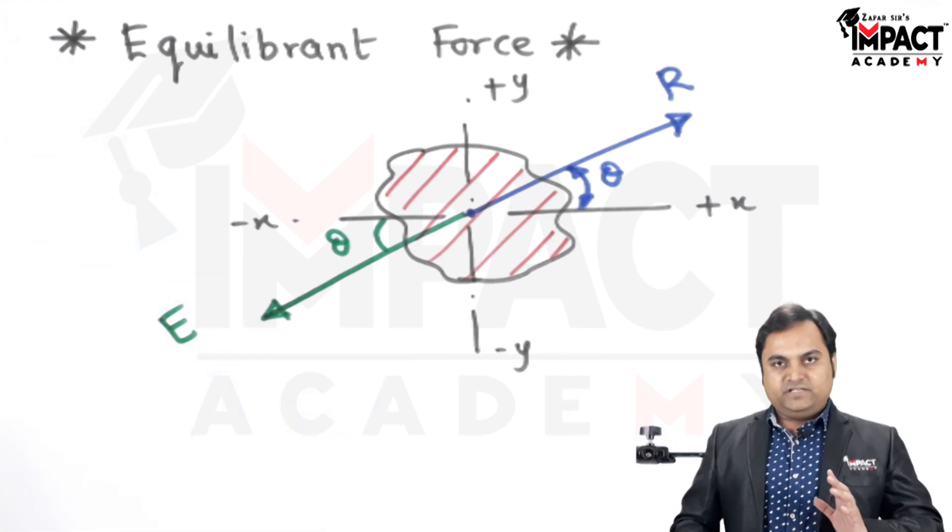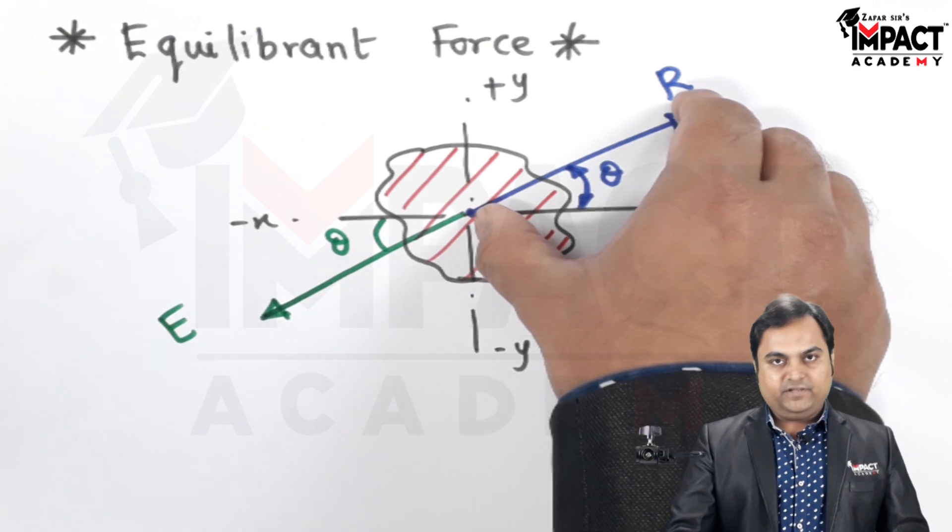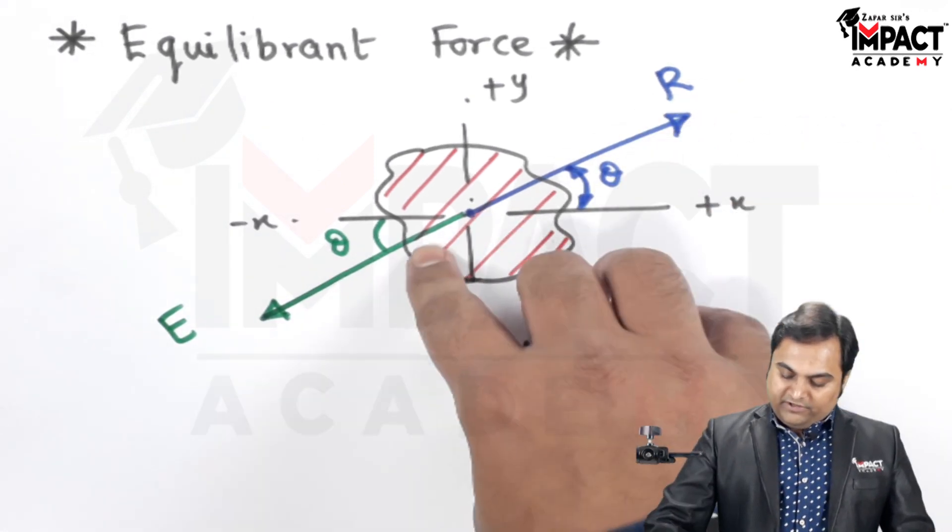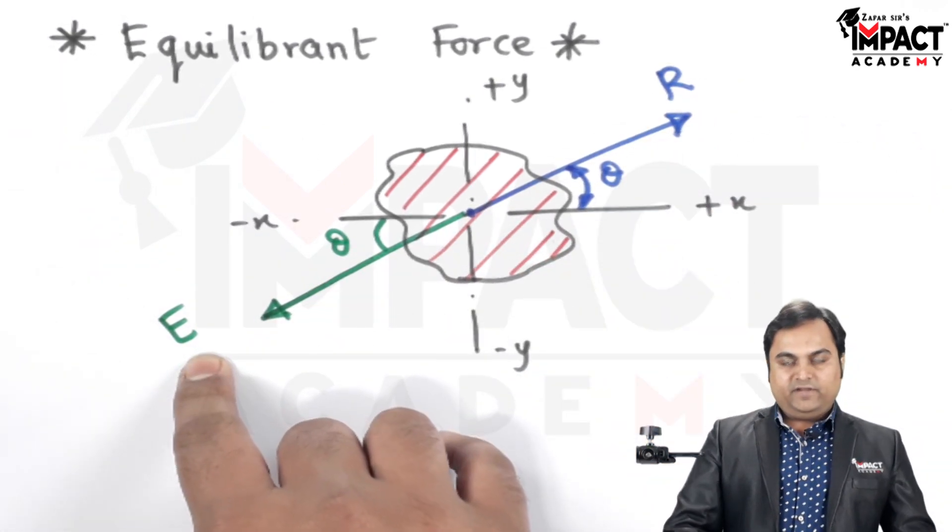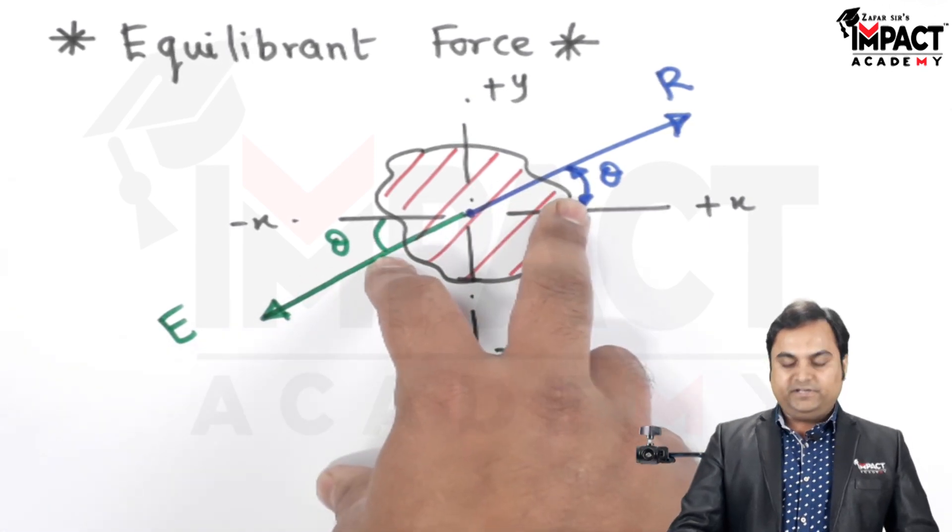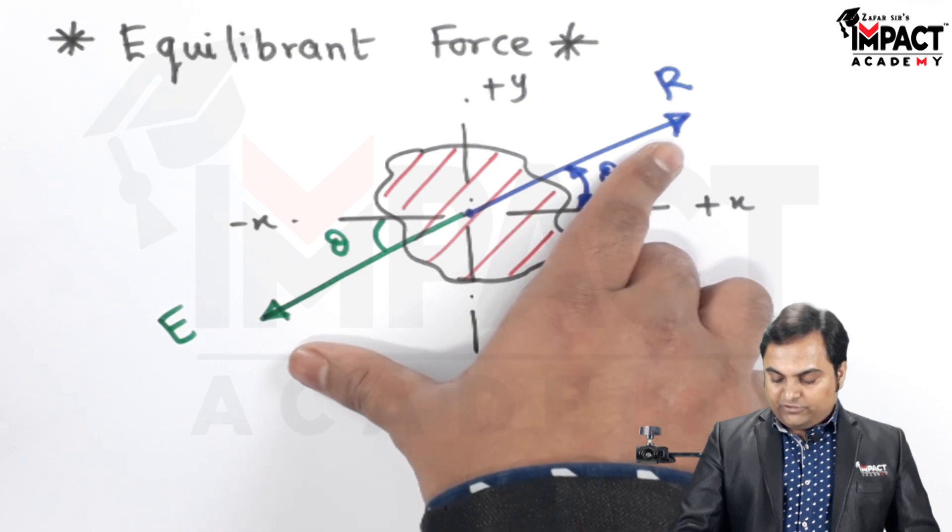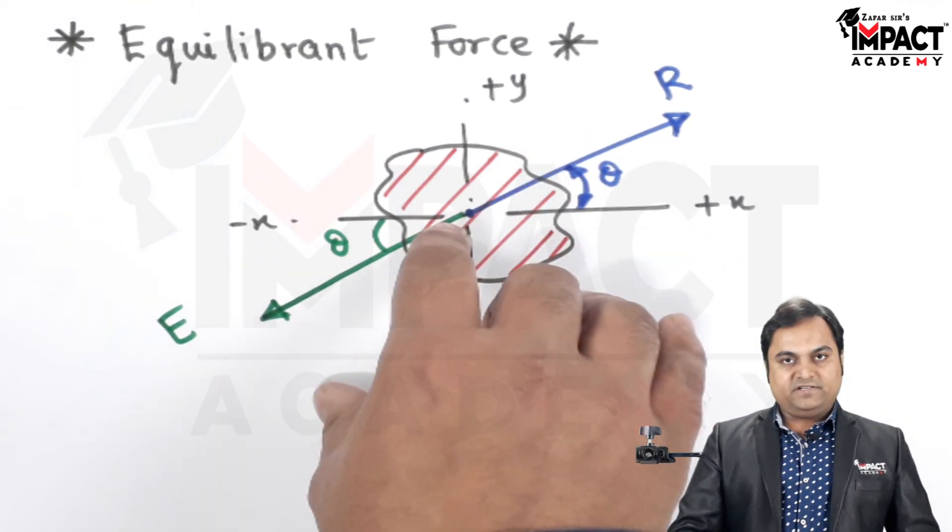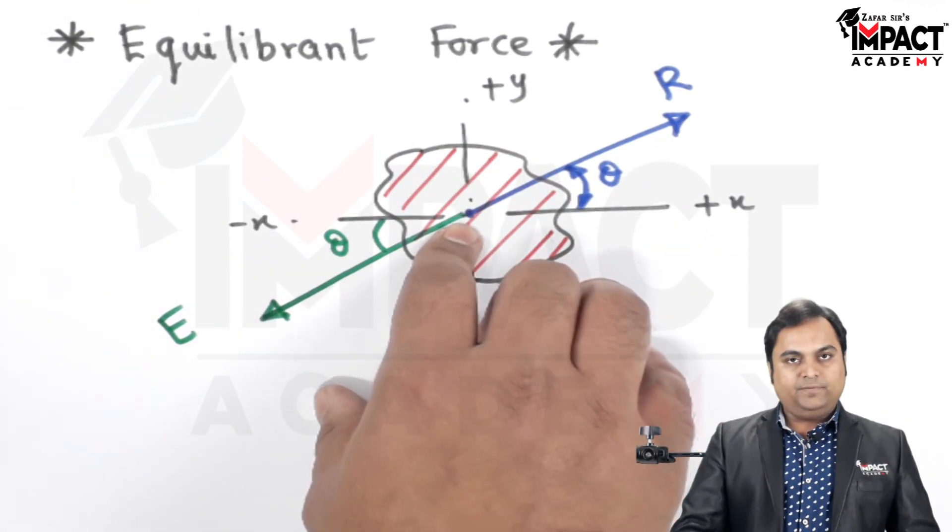So here there is only an assumption which I have taken that the resultant is there in the first quadrant. So opposing it will be the equilibrium force which would be there in the third quadrant having the same angle theta and due to these equal and opposite forces the body would remain at rest, that is it would remain in the equilibrium position.